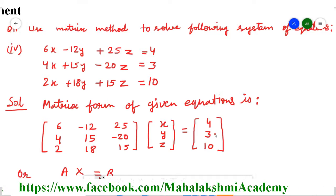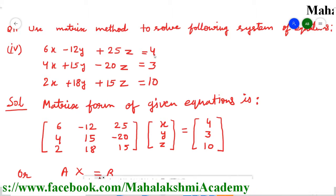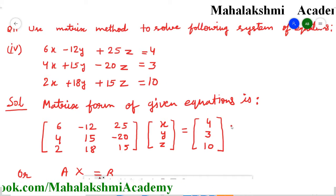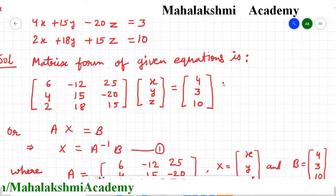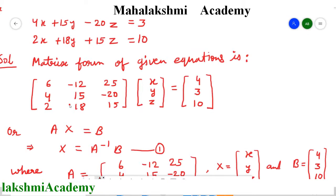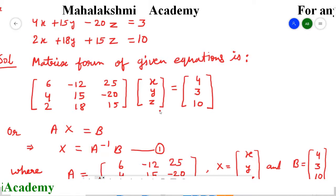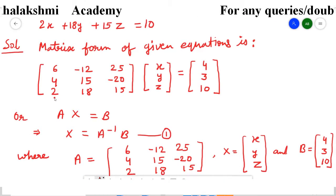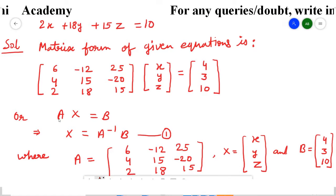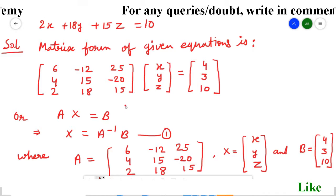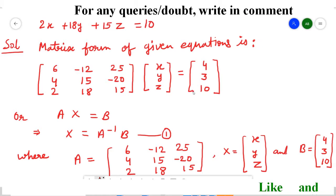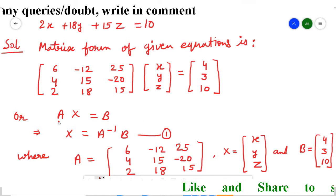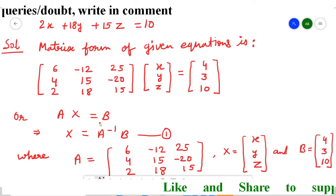After the equal sign, the right-hand side values are 4, 3, and 10, written in sequence as a column matrix. So like this, the given equations are converted into matrix format. This square matrix is assumed as A, this column matrix of variables is assumed as X, and this column matrix of right-hand side values is assumed as B. So it is our equation A times X equals B.